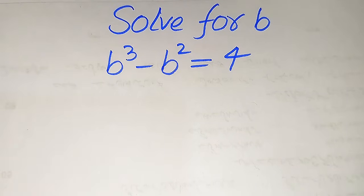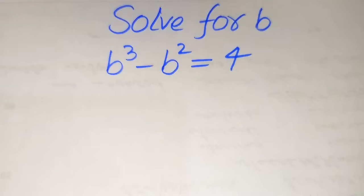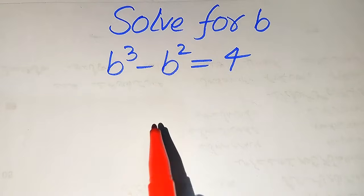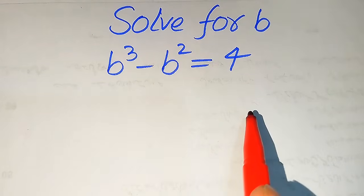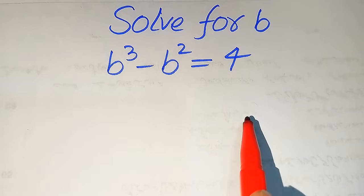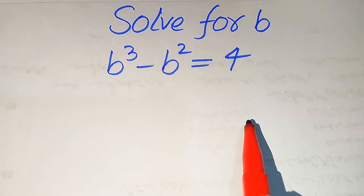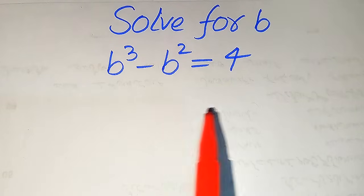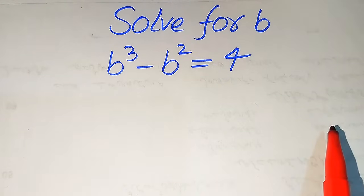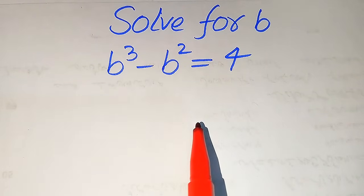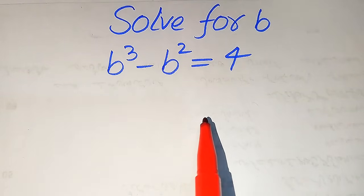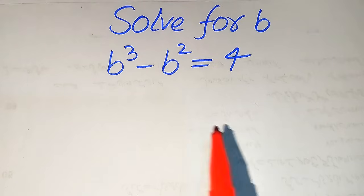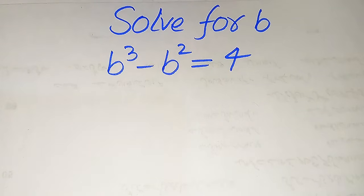Hello everyone. How to solve this problem for the values of b if we have b cubed minus b squared equals 4, and we solve this problem for all the values of b. This is a cubic equation or third order equation, which means that this equation has 3 roots, and now we will find all the roots of this equation.